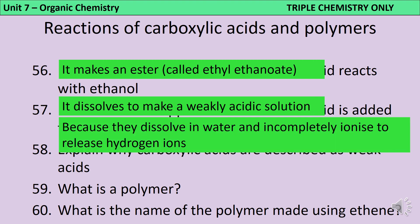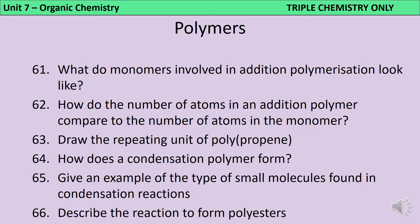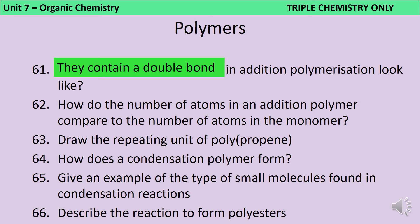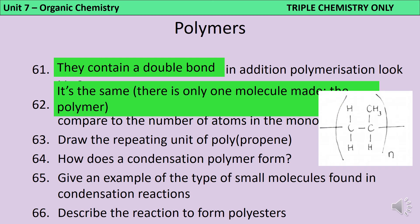A polymer is a very long chain of repeating units called monomers joined together by strong covalent bonds. When you make a polymer using ethene it's called polyethene. Addition polymers are made from monomers that contain a double covalent bond. The number of atoms in an addition polymer is exactly the same as in the monomers, because there is only one product. The repeating unit of polypropene is drawn like propene but without the double bond; instead, bonds come out the sides showing they're joined in the polymer chain, enclosed in brackets with an n.